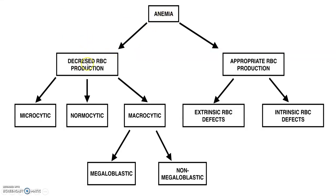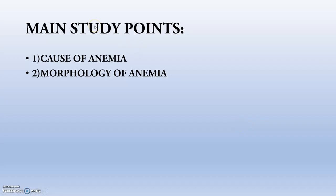Anemia due to decreased RBC production can actually be microcytic, meaning the cells are very small; normocytic, where the cell size is normal; or macrocytic, meaning the cell size has increased. In macrocytic, there are two types: megaloblastic and non-megaloblastic. In appropriate RBC production, there are extrinsic and intrinsic RBC defects — that is, whenever RBC production is normal but there are many problems with the normally produced RBCs.